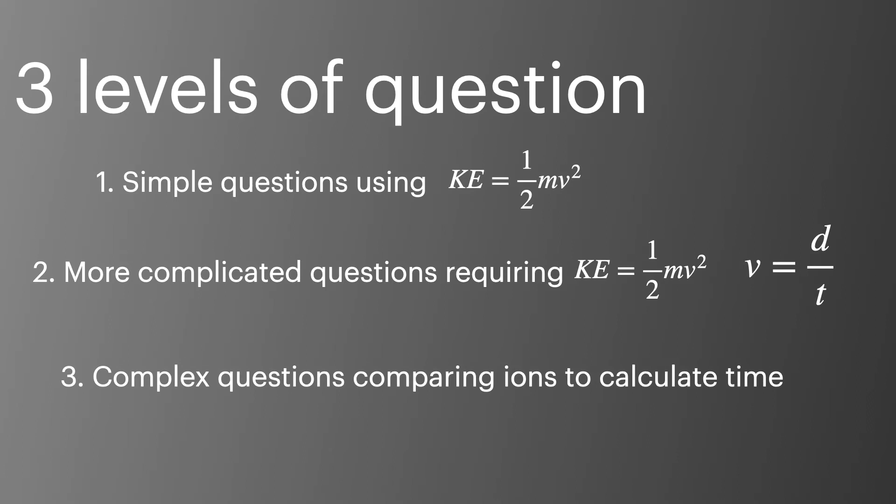These make a regular appearance on AS exam papers and can be solved in two different ways. The final and the most complex type involves comparing two different isotopes. Usually you're given the time it takes for one isotope to reach the detector, but then must calculate the time it will take for the second isotope to reach the detector. Unsurprisingly these are the more common exam questions at A-level.